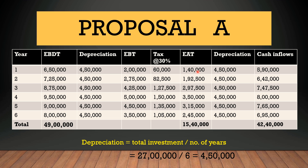Now, is this Earnings After Tax your actual cash flow? The answer is no. Because we deducted depreciation to get EBT, but depreciation is a non-cash item — you are not paying depreciation to anyone outside your organization. There is no cash outflow due to depreciation. So once we have Earnings After Tax, we must add back the depreciation to arrive at the actual cash inflows.